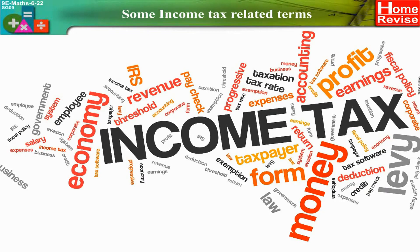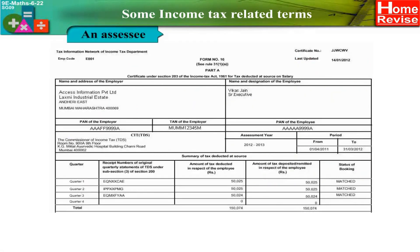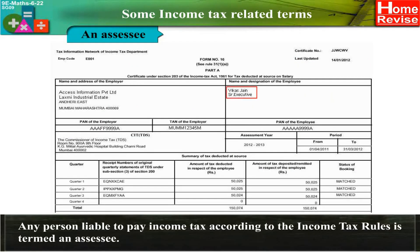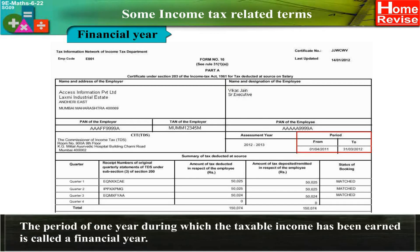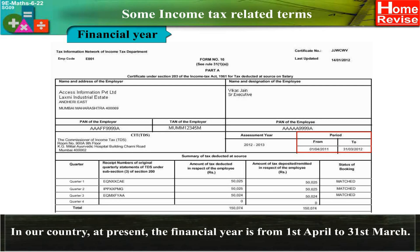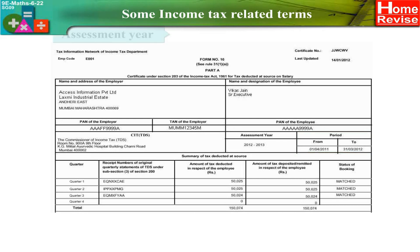Some Income Tax Related Terms. Assessee: A person liable to pay income tax according to the income tax rules is termed an assessee. Financial Year: The period of one year during which the taxable income has been earned is called a financial year. In our country, at present, the financial year is from 1st April to 31st March.